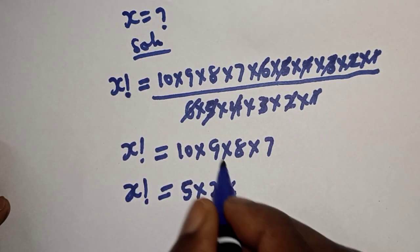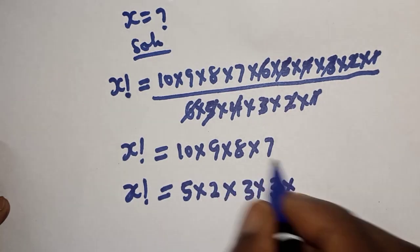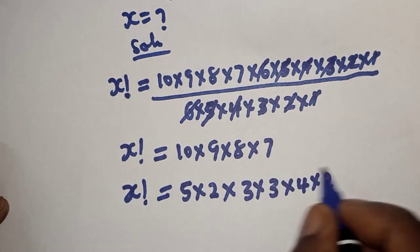Then x factorial is equal to 10 which is 5 times 2, multiplied by 9 which is 3 times 3, multiplied by 8 which is 4 times 2, multiplied by 7 which is 1 times 7.